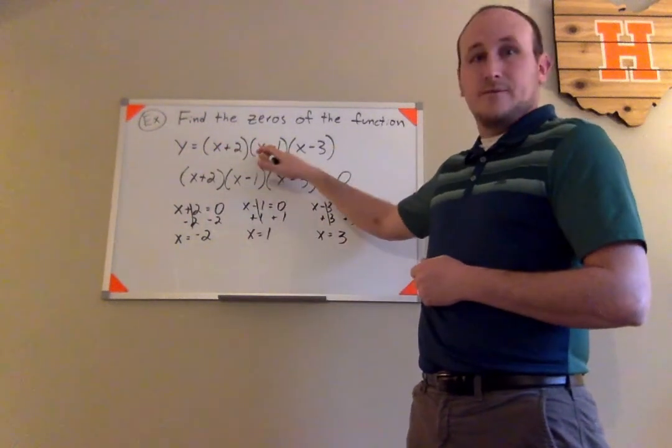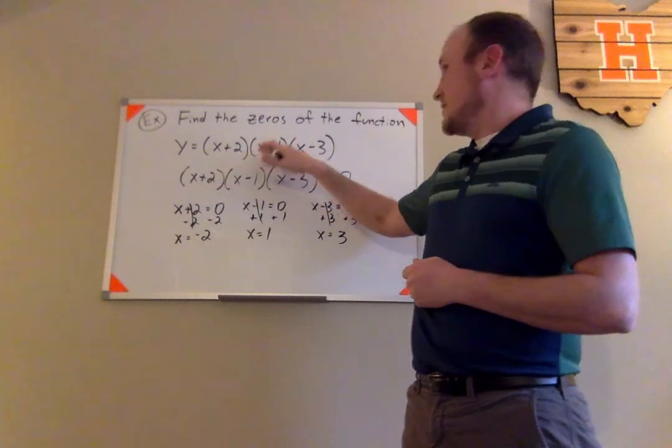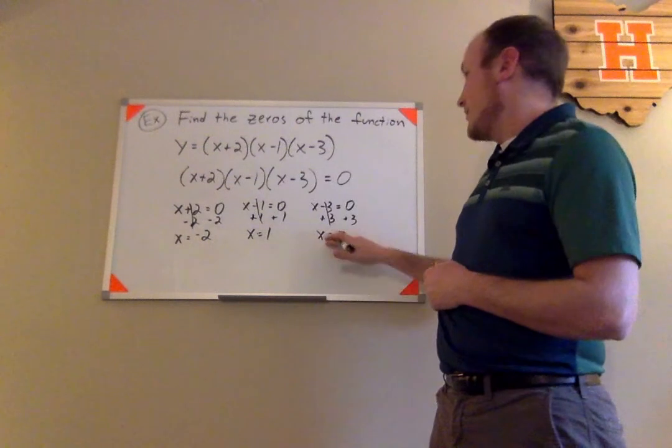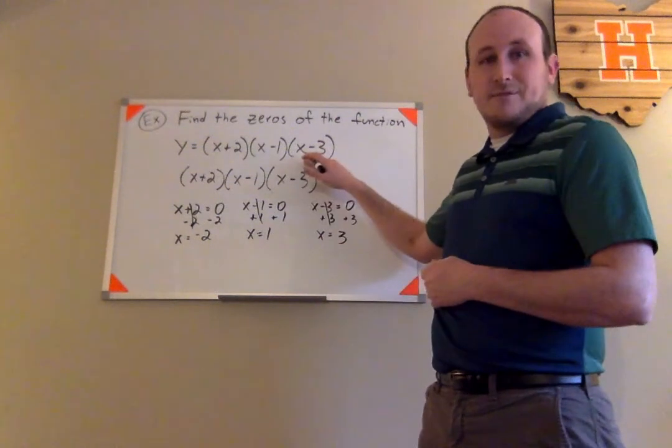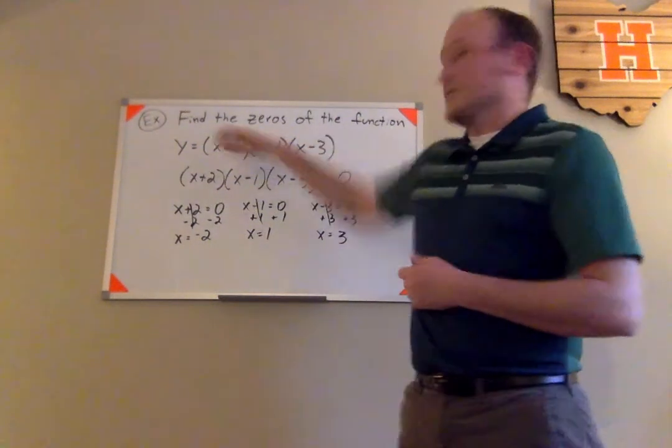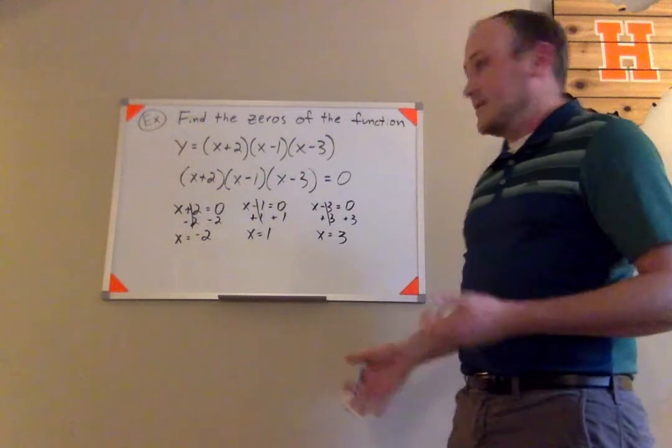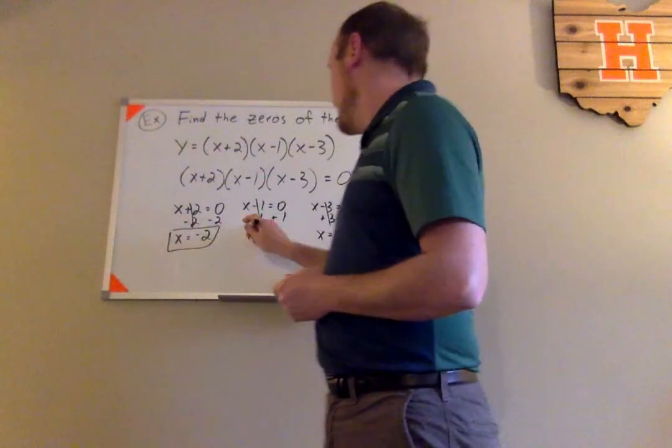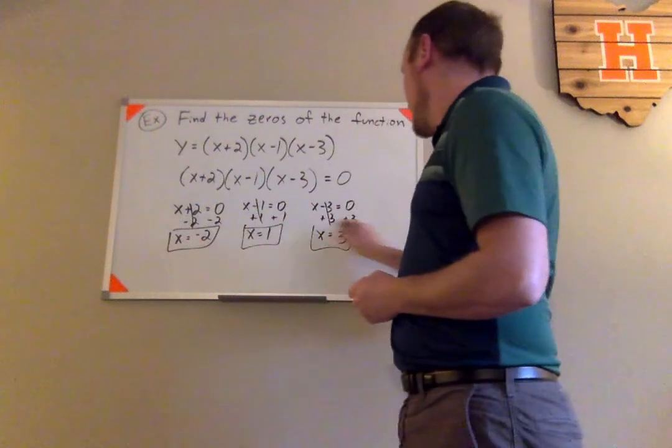One would make this middle factor equal to zero. And then zero times whatever these two were would be equal to zero. And finally, three would make this last factor equal to zero. And zero times whatever these were would also equal zero. So here we have the zeros of the function. Negative 2, 1, and 3.